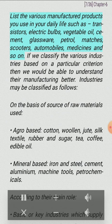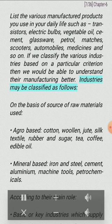The key to decision of factory location is the least cost. Government policies and specialized labor also influence the location of industry. Classification of industries: Industries may be classified based on various criteria. List the various manufactured products you use in your daily life such as transistors, electric bulbs, vegetable oil, cement, glassware, petrol, matches, scooters, automobiles, medicines and so on. If we classify the various industries based on a particular criterion, we would be able to understand their manufacturing better.